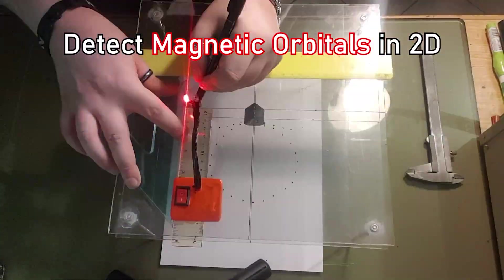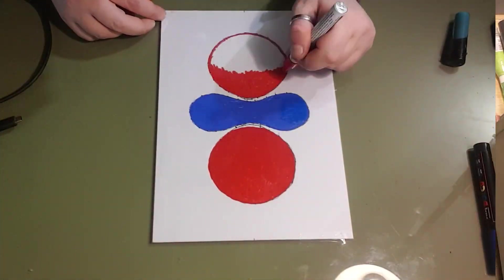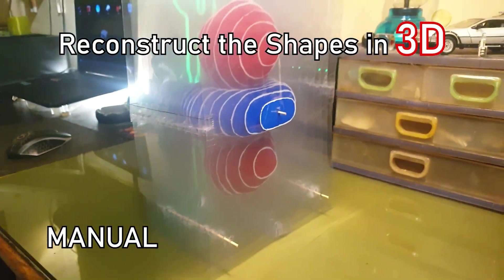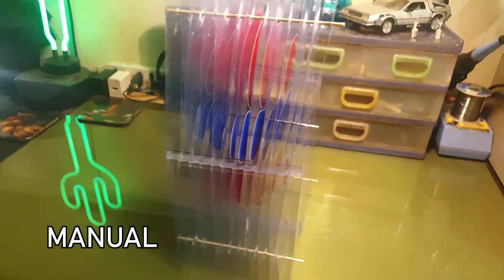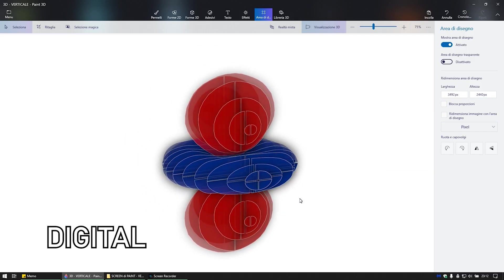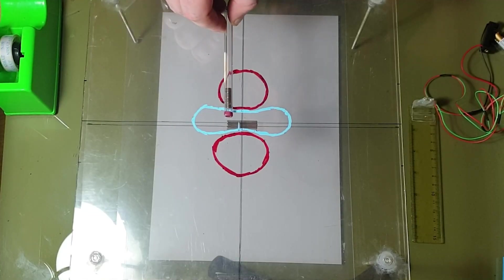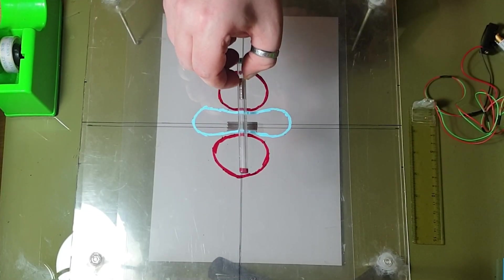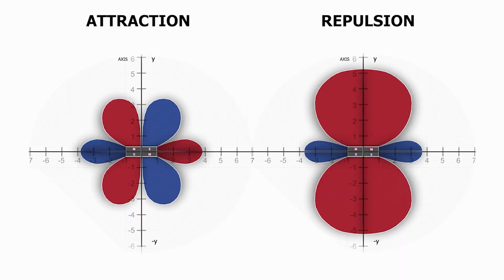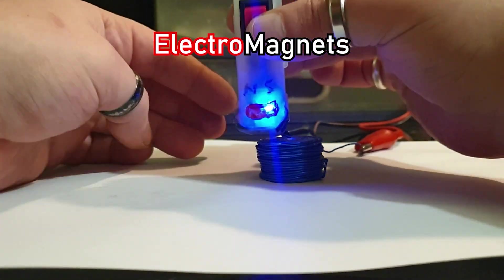Detect magnetic orbitals in 2D, reconstruct the shapes in 3D, verify the accuracy of those shapes using another magnet, recognize how these magnetic bubbles interact when multiple magnets are involved, and even apply this method to electromagnets.